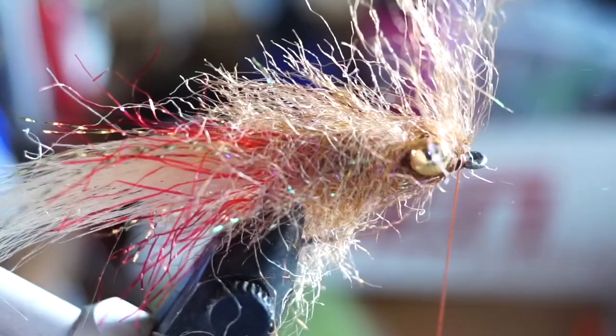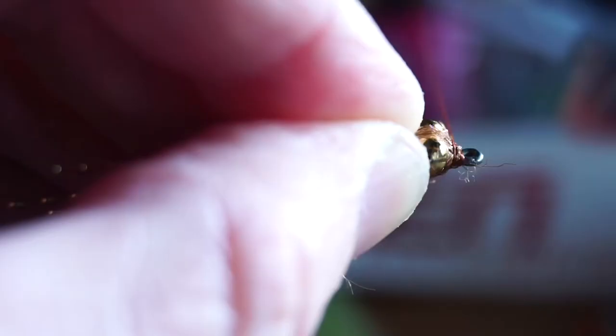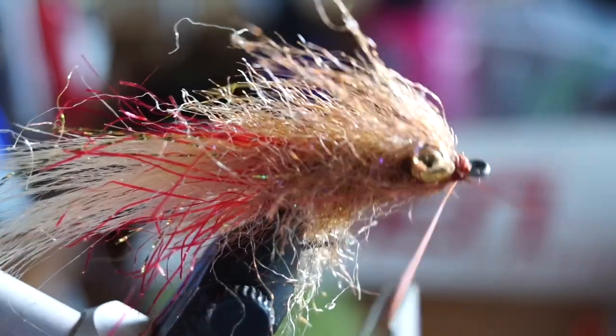Then clip off the brush using some clippers like so. Now you'll probably have to fold the wire back so you don't cut your thread. Then create a small neat head on the fly like so. Now you can whip finish your fly.